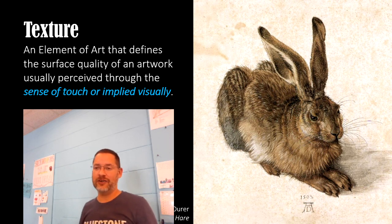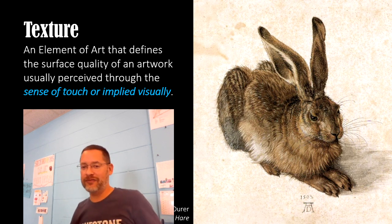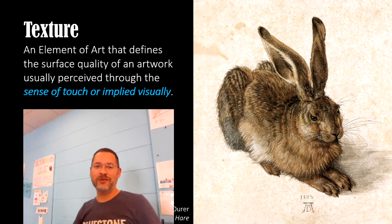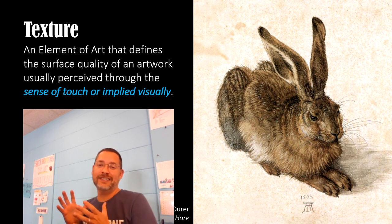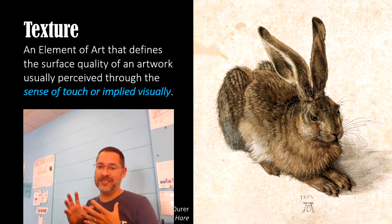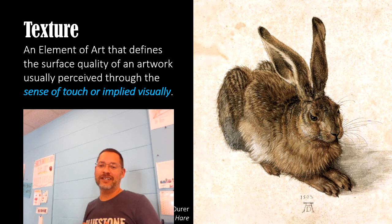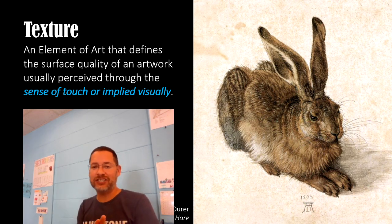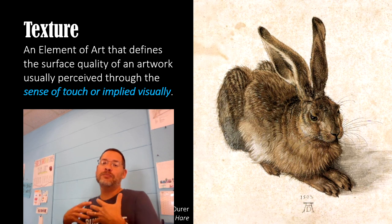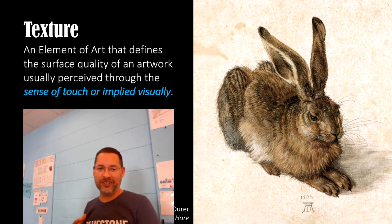Or it's implied visually. So what that means is, if you look at this bunny right here — this is Albrecht Dürer, a very famous artist — this looks like a real, genuine, fuzzy bunny. It looks like if you touch that rabbit, it would be soft and plush. If you've ever touched a real bunny, they are just ridiculously soft. So that is what it means to be implied visually. Now if you actually touched this painting of the rabbit, it would feel like paint on a canvas. But it's implied — it looks like it would be soft and fuzzy.